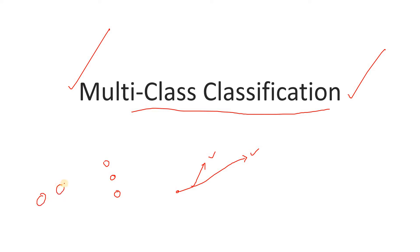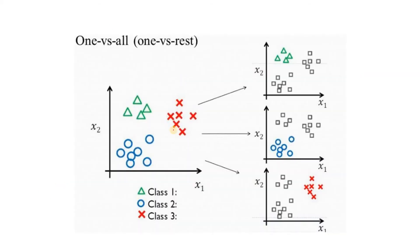Now suppose you have multiple options — three different classes: basketball, baseball, and football. You are applying image classification using SVM, and a new image comes in. You need to predict whether the ball is a basketball, baseball, or football. At that point, binary classification will not work, so we use multi-class classification by extending the binary classification concept.